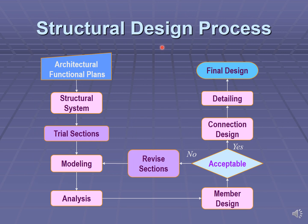The structural engineer's responsibility starts from the conception and planning of the structure, and implements the analysis, the design, manages the construction and erection of the structure. In the design of a structure, the following structural design process is usually followed. From the architectural plans submitted by the architect, the structural engineer decides on the structural system — columns, beams, frames, and walls — and decides on trial sections for structural modeling and analysis. The output of structural analysis are internal forces used to design the structural members. The structural engineer is guided by a code and decides on whether the design is acceptable. If acceptable, he proceeds to connection design, detailing, and submits the final design.